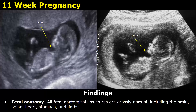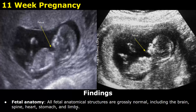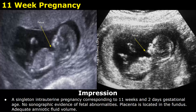After that you can write about fetal anatomy. All fetal anatomical structures are grossly normal including the brain, spine, heart, stomach, and limbs. This is the impression: a singleton intrauterine pregnancy corresponding to 11 weeks and 2 days gestational age, no sonographic evidence of fetal abnormalities, placenta is located in the fundus, and adequate amniotic fluid volume.